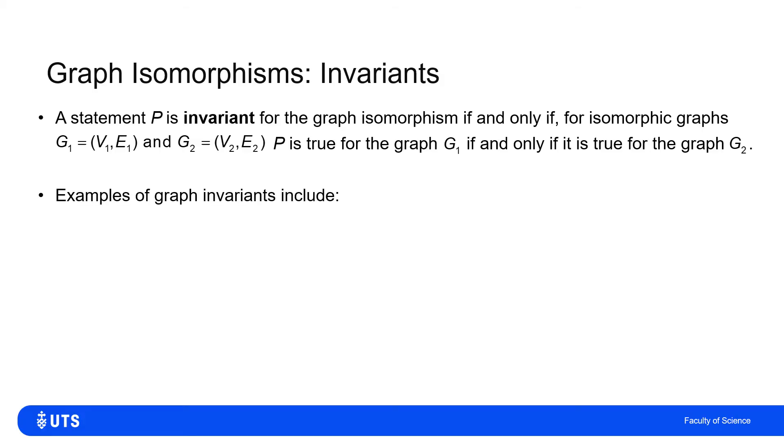Now, we won't prove all of these, but there are properties which are always invariant for isomorphic graphs. The trivial ones are the graph has N nodes. Obviously, it can't be isomorphic if it doesn't have the same number of nodes. Similarly, it can't be isomorphic if it doesn't have the same number of edges.